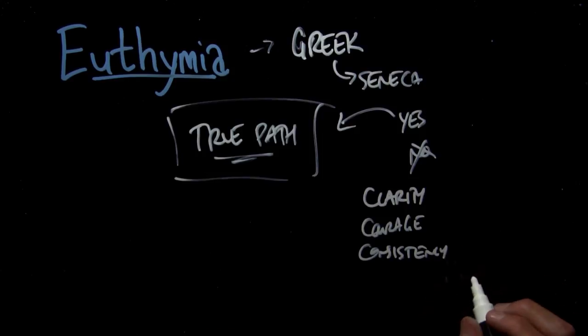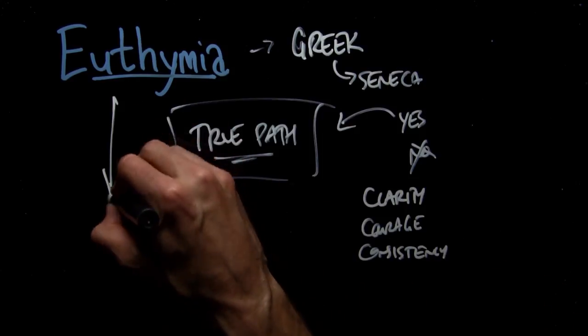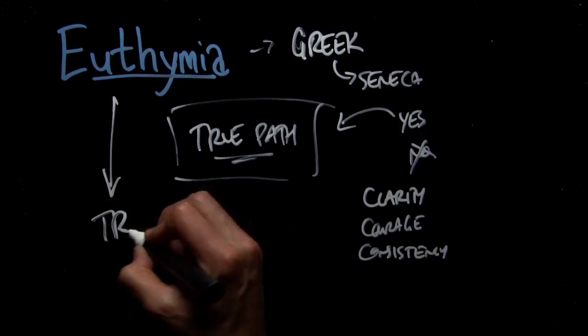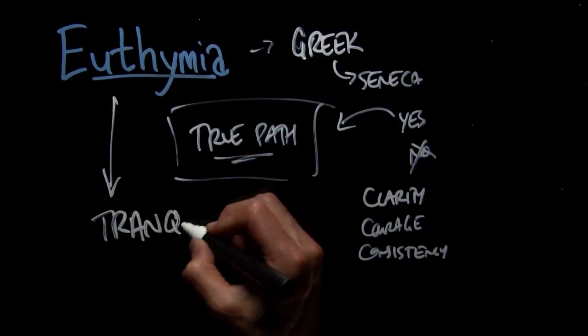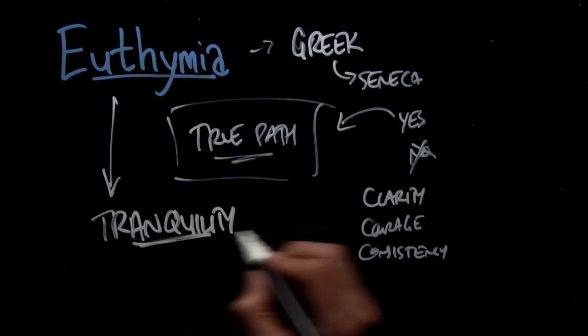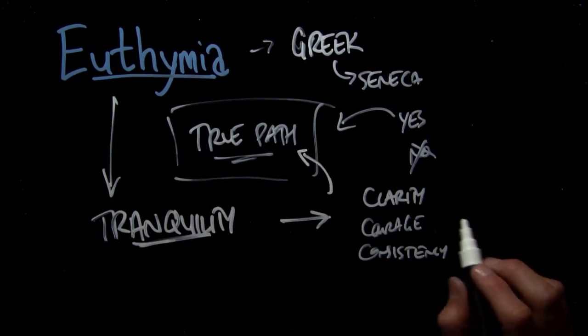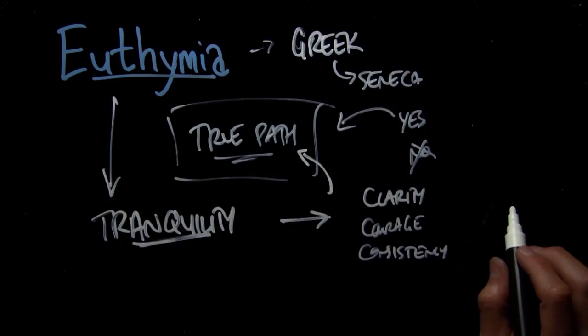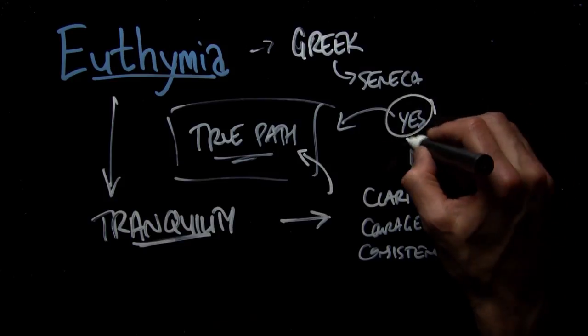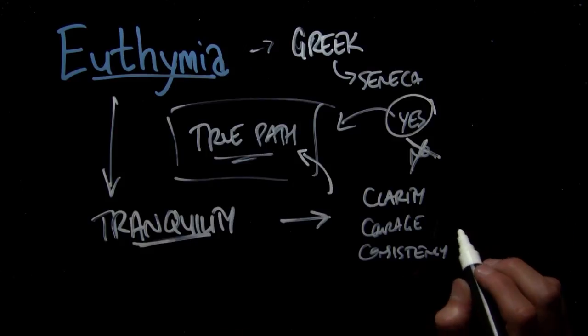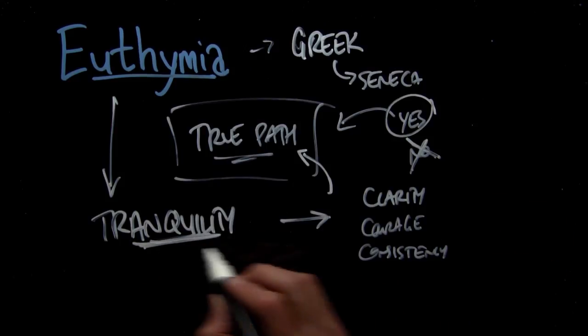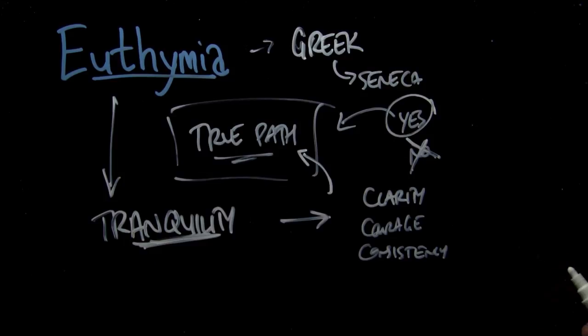Euthymia. Now what's cool is the word Euthymia has been translated into English as tranquility. When you have clarity, courage, and consistency in living your true path, you're running your own race. You're not trying to compete and beat other people. You ignore that process. You have this big yes. You say no to distractions. That feels really good. Leads to a feeling sense of tranquility. You're at one with yourself. You're at peace with yourself because you're so focused on who you are and what you're here to do.